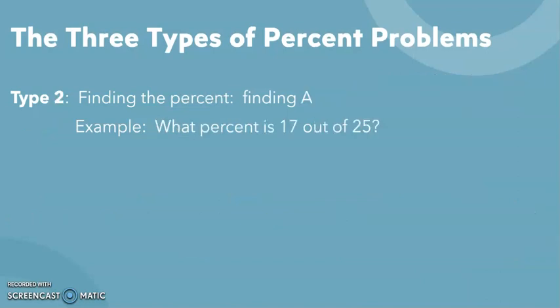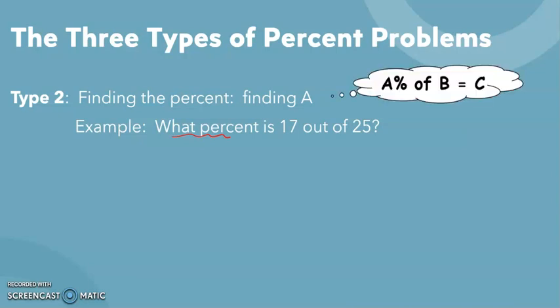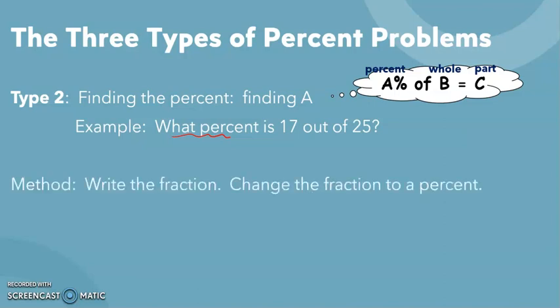Type 2 is where we're looking for the percent. And it's going to be taking something out of something else. Notice you don't see what the percent is. It doesn't show that to you. So, you're going to say A% of B equals C. And this is the case where you're looking for the percent. You're going to put the part over the whole. In this case, the 17, let's say the 17 marks you got out of a test that's on 25.